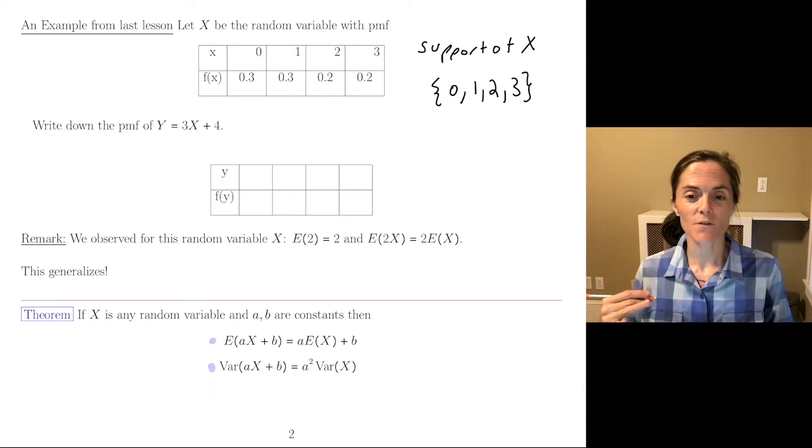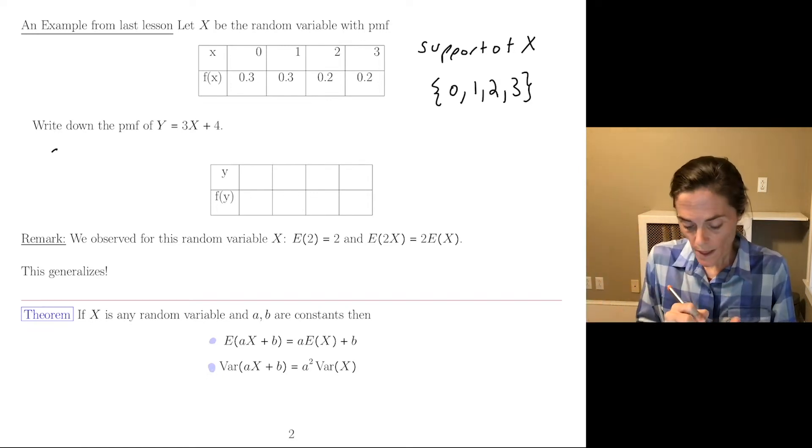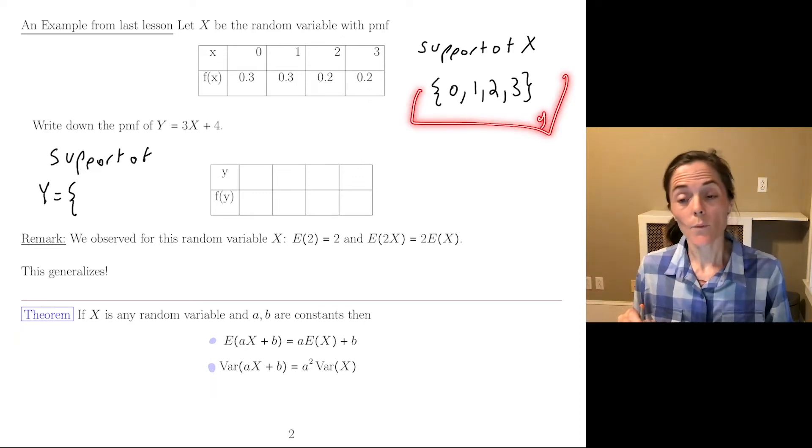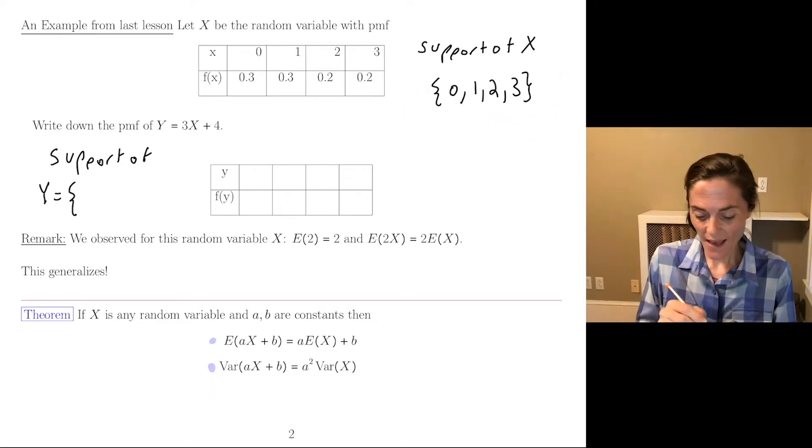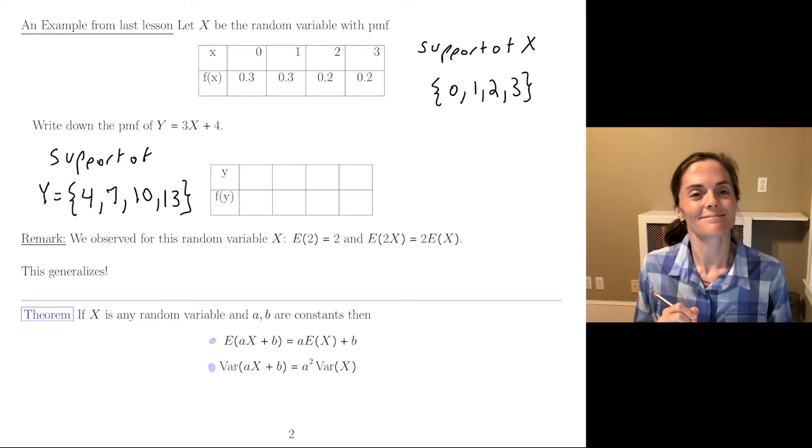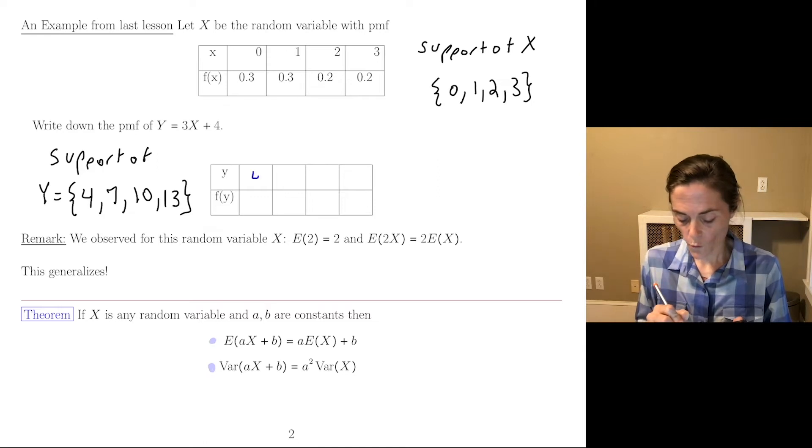We will write down a probability mass function for Y equals 3X plus 4. So to start this, we can write down the support of Y. For each X in this set, we just take 3X plus 4. So we have 4, we have 7, we have 10, and 13. Now, we put these here. So Y can be 4, 7, 10, and 13.